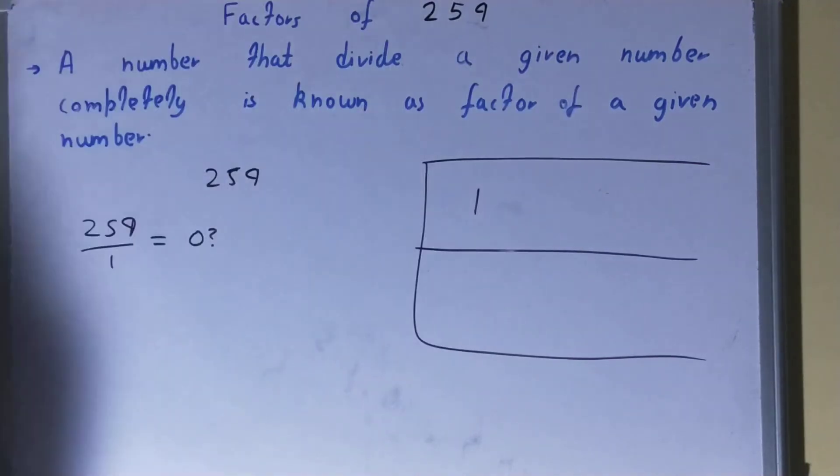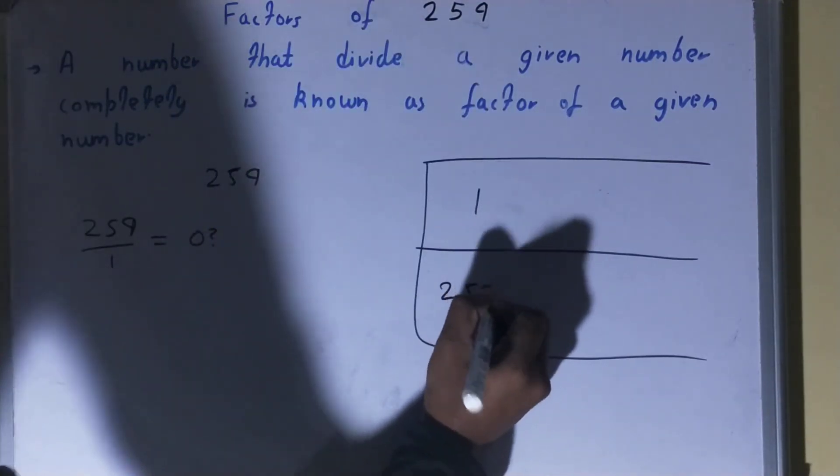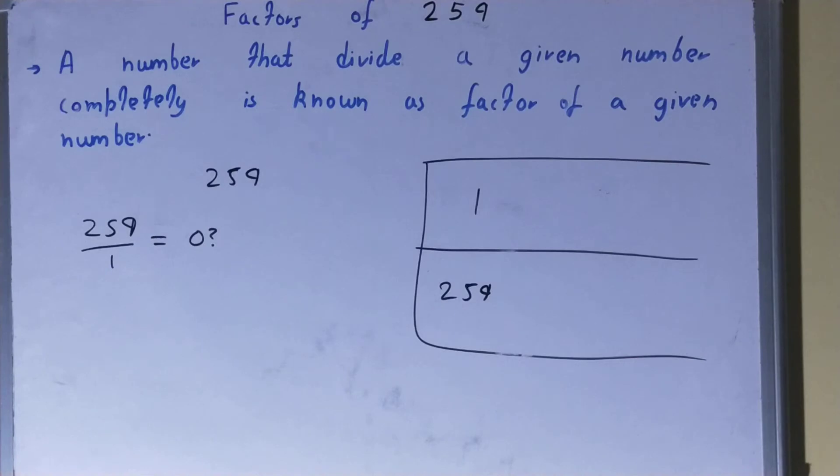So 1 we can write it over here in the factor list. And with the help of this 1, we can find out another factor. How? 1 into what times is 259? 1 into 259 times. So 259 will also be the factor.